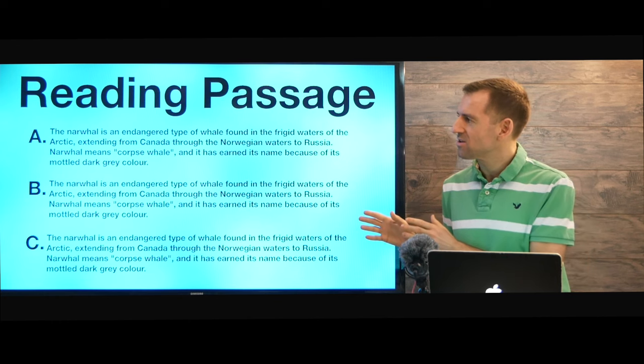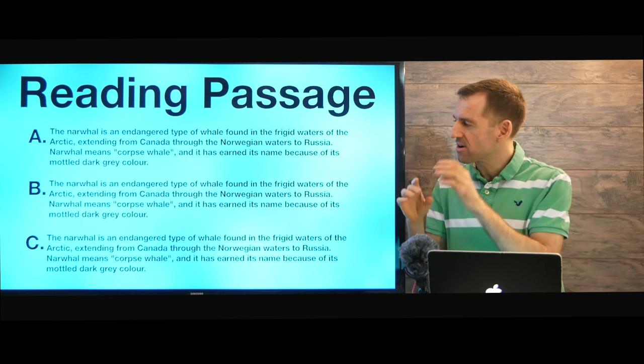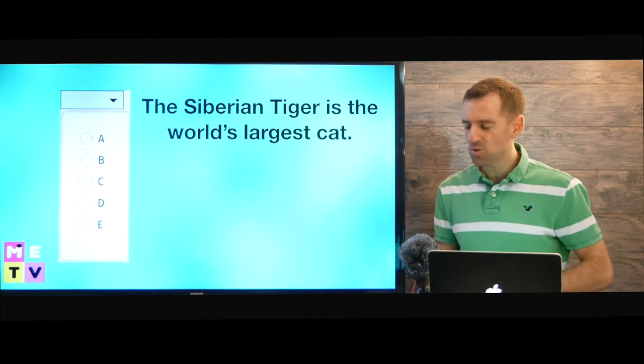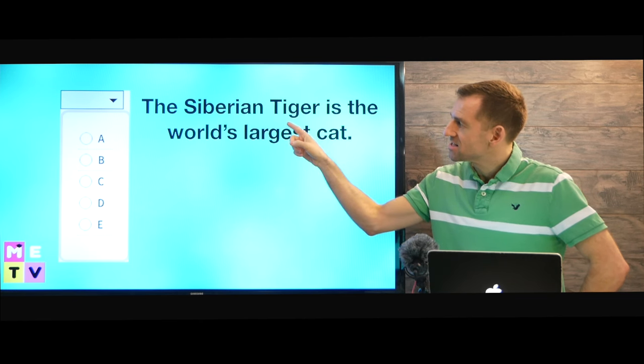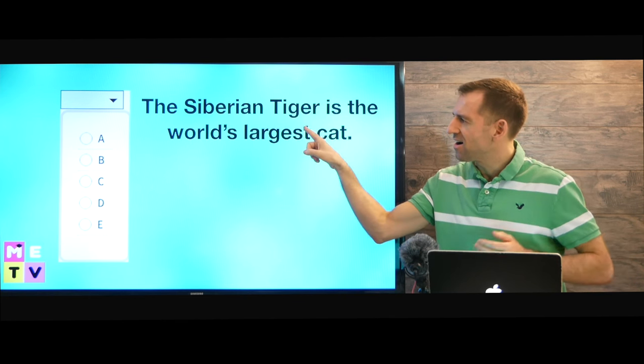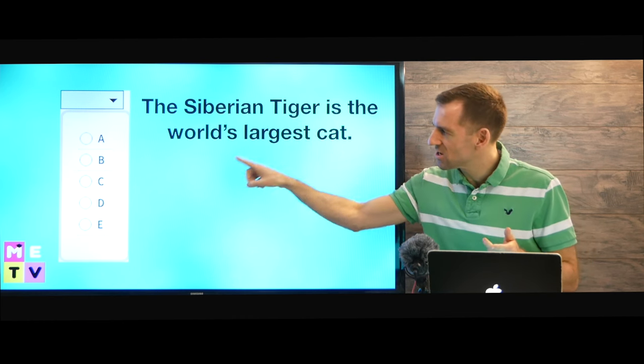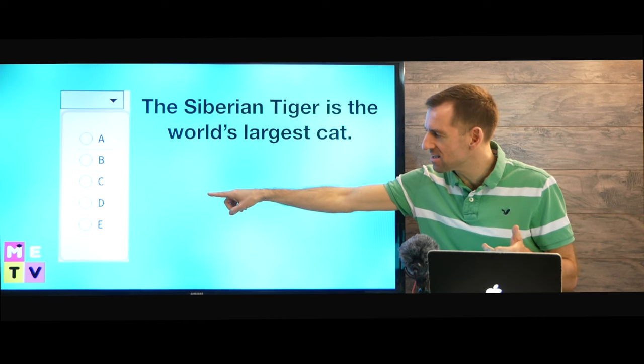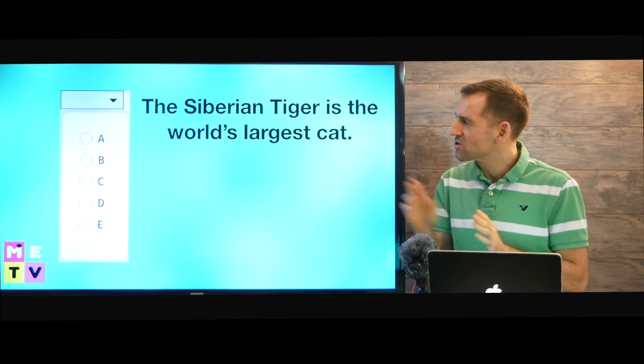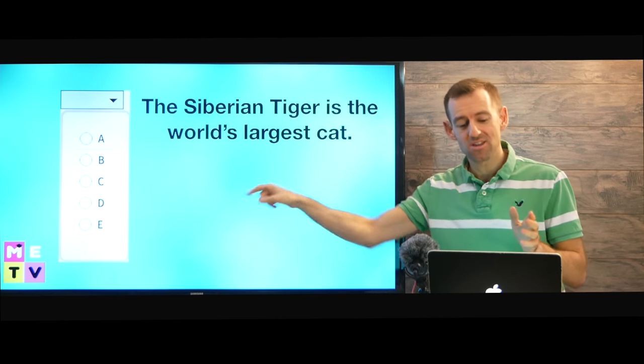Okay so in this question you're going to see a reading passage that is broken down into different paragraphs. Okay A B C D. Right? And then you're going to see questions that look like this. The Siberian tiger is the world's largest cat. Okay which paragraph was this information in? Was this information in paragraph A B C or D? Or E which means it wasn't in the reading passage at all. Okay so you're going to have nine questions that look just like this and you have to choose the right paragraph.